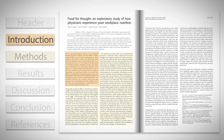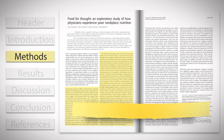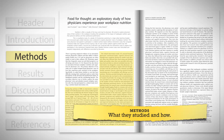Third is the methods section, where the authors describe exactly what they studied and how. They review the step-by-step process of how they argued for the thesis, answered their research question, or tested their hypothesis.